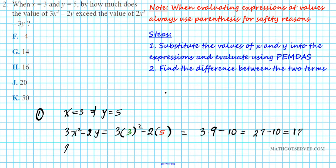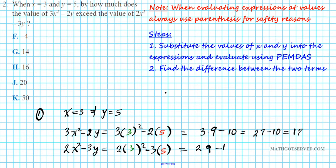Now evaluate the second expression, 2x² minus 3y, at x = 3 and y = 5. We have 2 times (3)² minus 3 times 5. Using order of operations: 3 squared is 9, so 2 times 9 minus 3 times 5 is 18 minus 15, which equals 3.